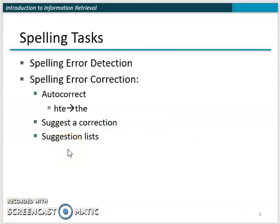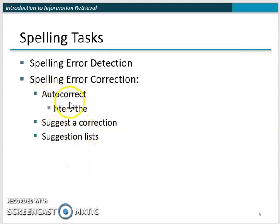There are two types of spelling tasks. The first is spelling error detection — you need to detect whether there is any error in a piece of text. The second is spelling error correction — once you've detected the error, you need to correct it. One approach is autocorrect: when you type 'HTE', it converts it to 'THE'. However, not all users prefer autocorrect, so you can instead suggest a correction for the user to accept or reject.